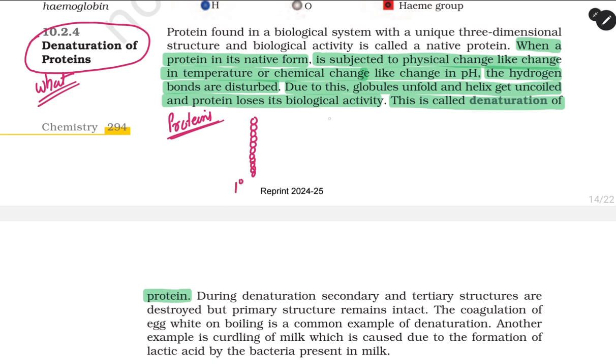But whenever there is coiling or folding or excessive coiling, these are called secondary, tertiary, and quaternary structures of the protein. The reason behind this formation of secondary, tertiary, and quaternary structure is hydrogen bonding.